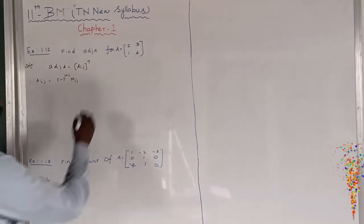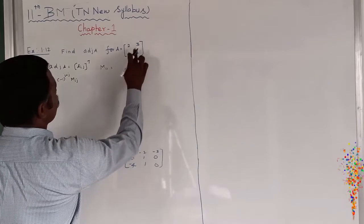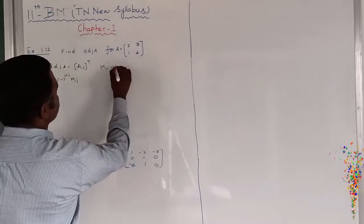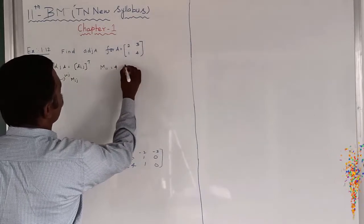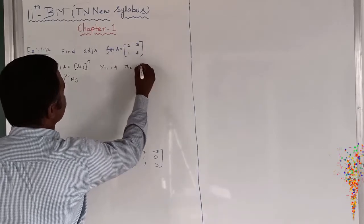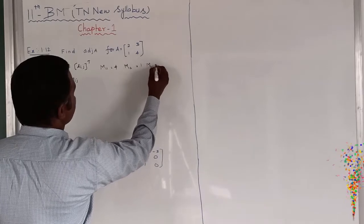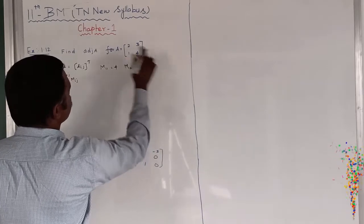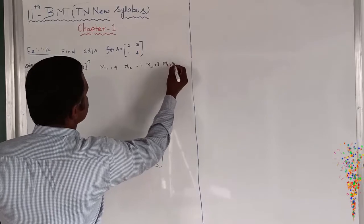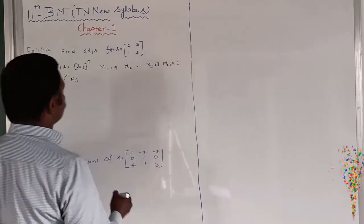First I want to find out minor M11. M11 means removing the row and column of element 2, so M11 equals 4. And M12, first row second column, equals 1. M21, second row first column, equals 3. And M22, first row second column removed, equals 2.